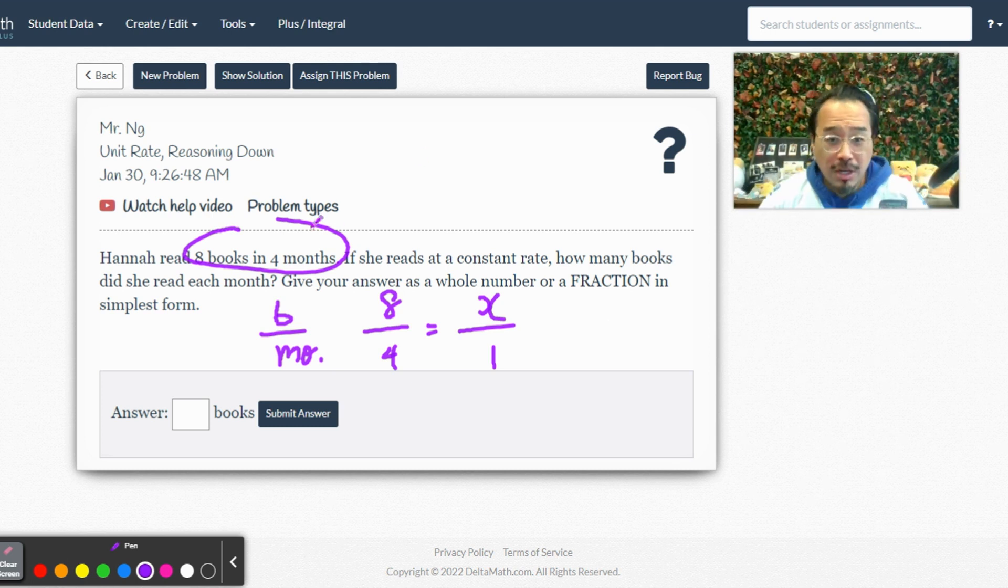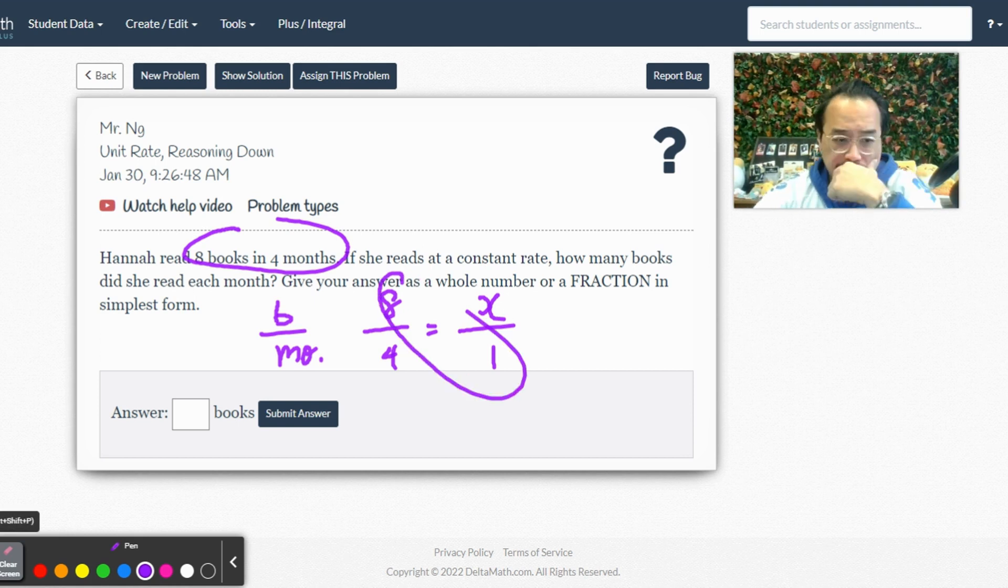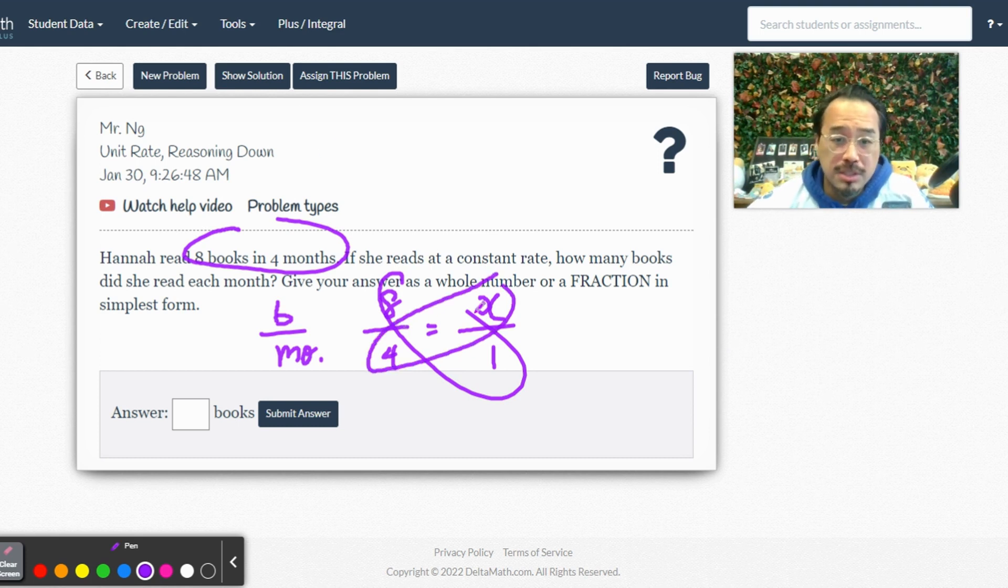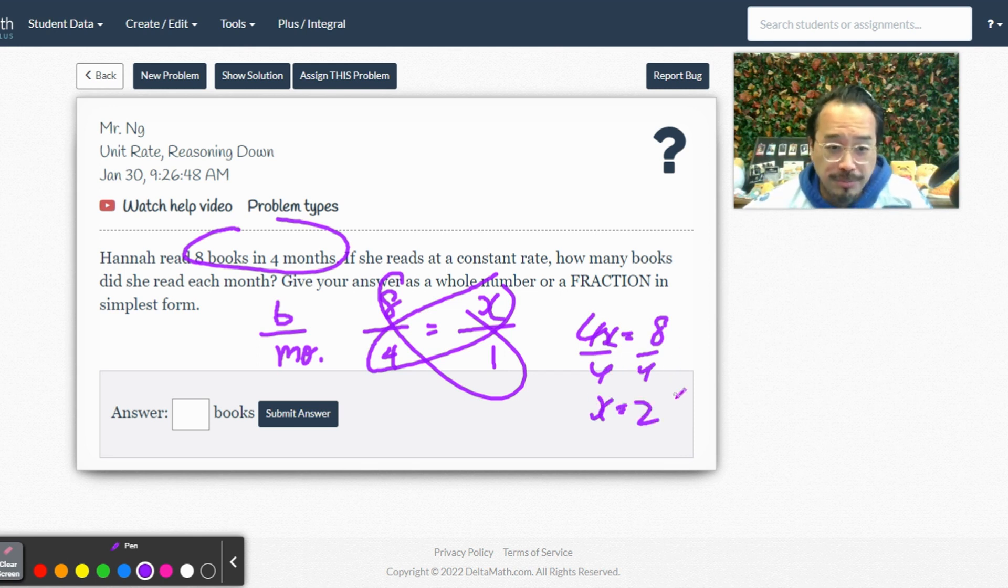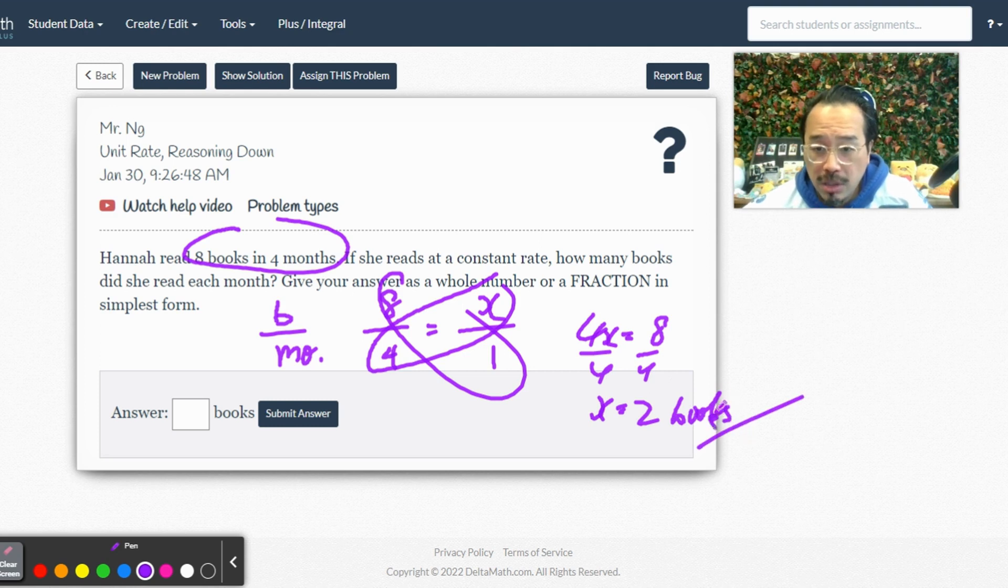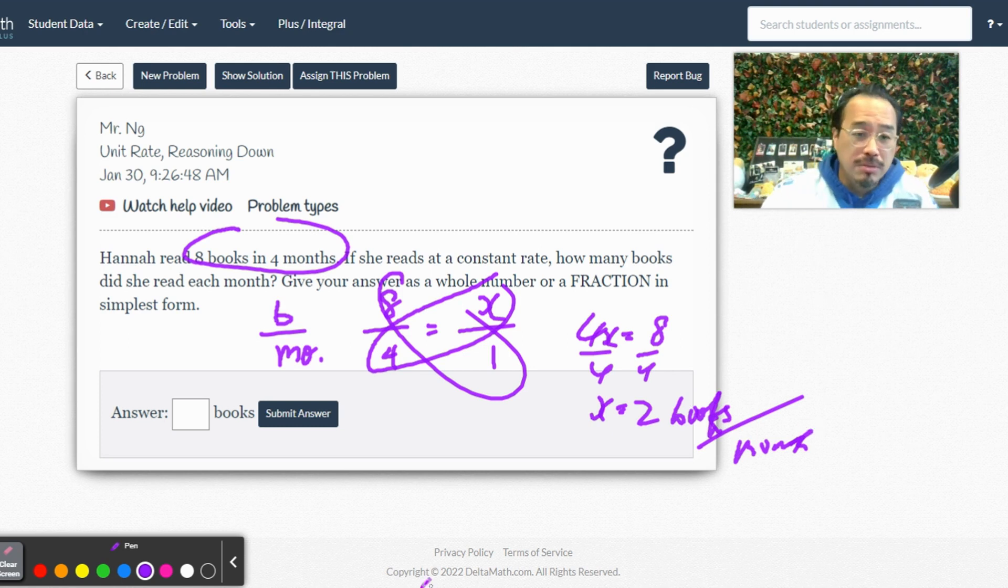All right, anyways. Now cross multiply and divide. So let's see, 4x equals 8. The answer is going to be a whole number because x equals 2. Two what though? Yeah, two books per month. Two books per month. Part of my handwriting - I'm trying to get this done ASAP so I could move on and do other things.